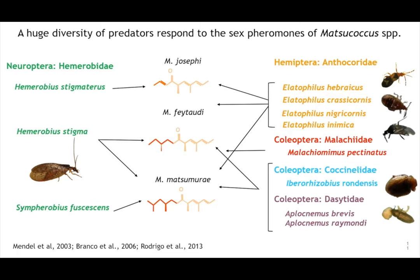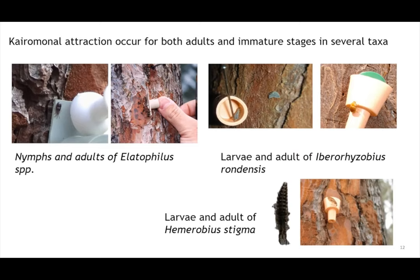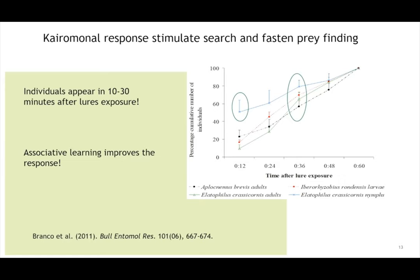Within some taxa, like Anthocoridae, there is a genus Elatophilus where all species are predators specific to pine bark scales, and many of them respond to the sex pheromone — probably indicating a common ancestor with the same ability. We also observed that not only adults but also larvae and nymphs of different taxa respond to the sex pheromone. In the field, we have observed very quick responses — sometimes just five minutes after exposing lures on the tree trunk. In the lab, we could also see associative learning: Elatophilus stigma, when reared on a specific prey, increased its ability to respond to that prey's sex pheromone.